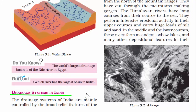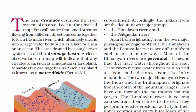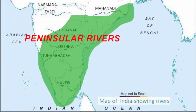We know that the land surface controls the movement of rivers because of the broad relief features our country has — the mountains, plains, plateaus, etc. You can see the pattern of the rivers of our country. Now, let us shift our focus from their flow to their origination. The Indian rivers are divided into two major groups: the Himalayan rivers and the peninsular rivers.